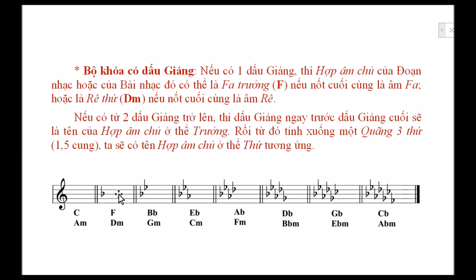Cụ thể như vừa nói, nếu tác phẩm chỉ có một dấu giáng, thì tác phẩm đó thuộc giọng pha trưởng hoặc rê thứ. Còn nếu có hai dấu giáng trở lên, thì dấu giáng ngay trước dấu giáng cuối. Ví dụ ở đây, mi là dấu giáng cuối, vậy thì dấu giáng ngay trước là si, chính là tên của hợp âm ở thể trưởng là si giáng trưởng. Còn hợp âm song song là son thứ.